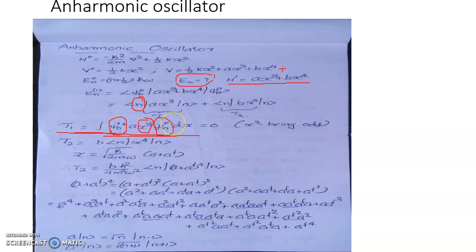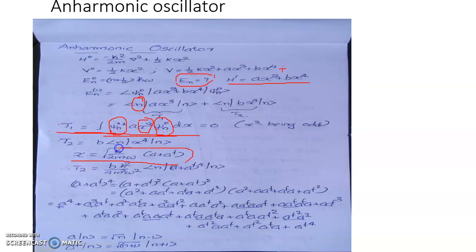The second term T2 involves the even power x to the fourth, so its integral does not vanish. We take out the constant b and evaluate the scalar product of n with x to the fourth acting on n. We replace x by means of the creation and annihilation operators: x equals square root of h-bar over 2m omega, times the quantity a plus a-dagger. Then the second term becomes b times h-bar squared over 4m squared omega squared, times the scalar product of n with the quantity a plus a-dagger to the power 4 acting on n.